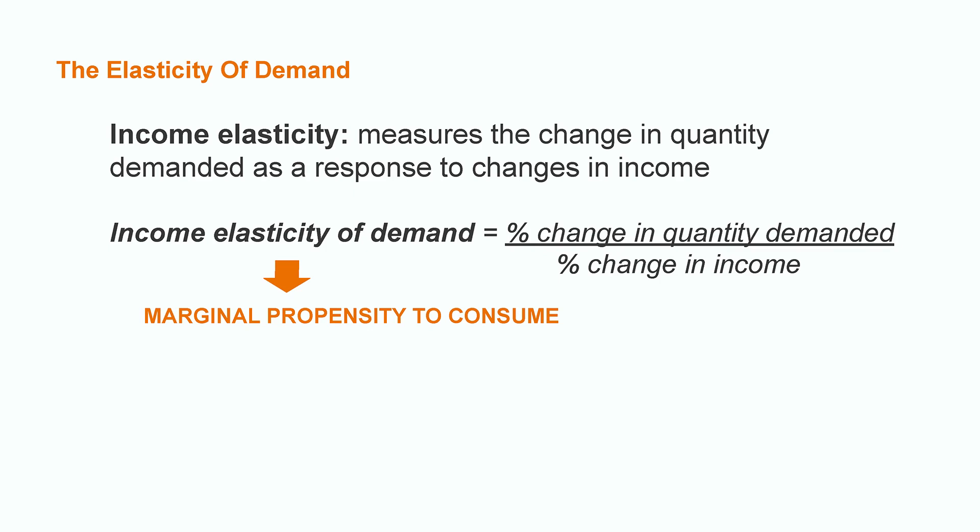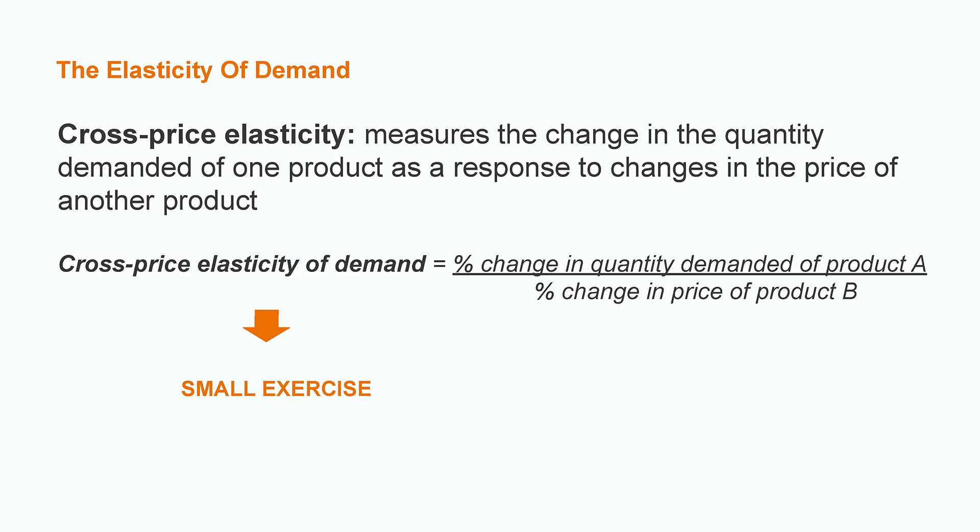There are other types of demand elasticities. We have the income elasticity, which measures the change in quantity demanded as a response to changes in income. This elasticity is highly used in macroeconomics, since it captures what we call the marginal propensity to consume — in other words, it tells us how much consumption will change if income experiences a variation. We also have the cross-price elasticity of demand, which measures the change in the quantity demanded of one product as a response to changes in the price of another product.